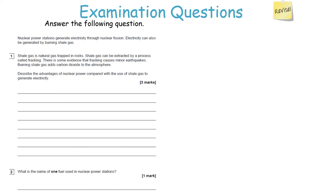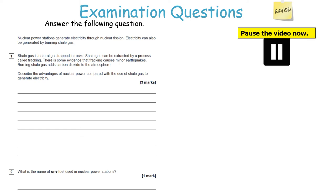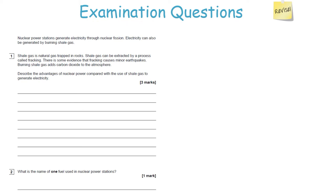Next question. Nuclear power stations generate electricity through nuclear fission. Electricity can also be generated by burning shale gas, which is natural gas trapped in rocks extracted by fracking. There is some evidence fracking causes minor earthquakes, and burning shale gas adds carbon dioxide to the atmosphere. Describe the advantages of nuclear power compared with shale gas to generate electricity, and name one fuel used in nuclear power stations. Pause the video now.